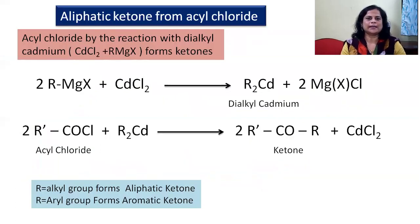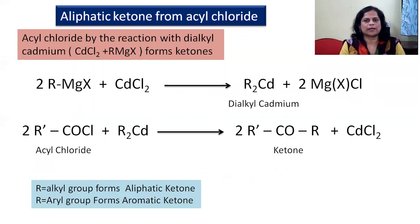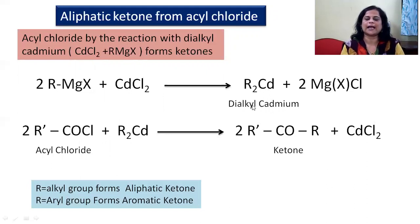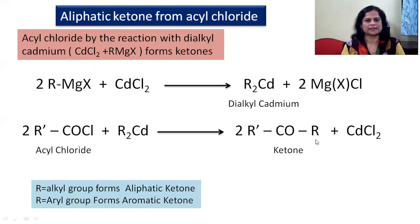For preparation of aliphatic ketones from acyl chlorides, we use dialkyl cadmium. First, dialkyl cadmium is prepared from Grignard reagent RMgX with cadmium chloride to give dialkyl cadmium (R2Cd). In the general reaction, acyl chloride (RCOCl) reacts with dialkyl cadmium: the R'CO group remains, the Cl from acyl chloride is removed as cadmium chloride, and the R2 group from the cadmium reagent is added to the acyl group, forming a ketone.